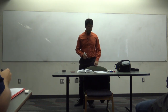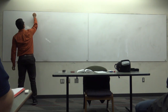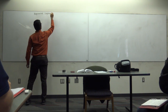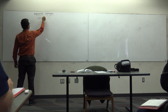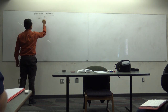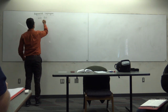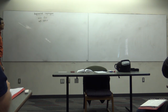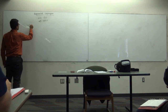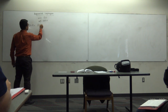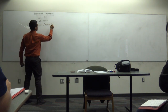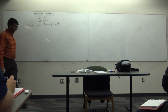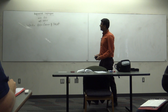We will continue our discussion on the augmented Lagrangian method. The problem we are trying to solve is minimize f(x) subject to h(x) = 0 and x in capital X. We define the augmented Lagrangian function as f plus lambda-transpose h plus c over 2 times the norm of h(x) squared. This is a recap of what we did in the previous class.